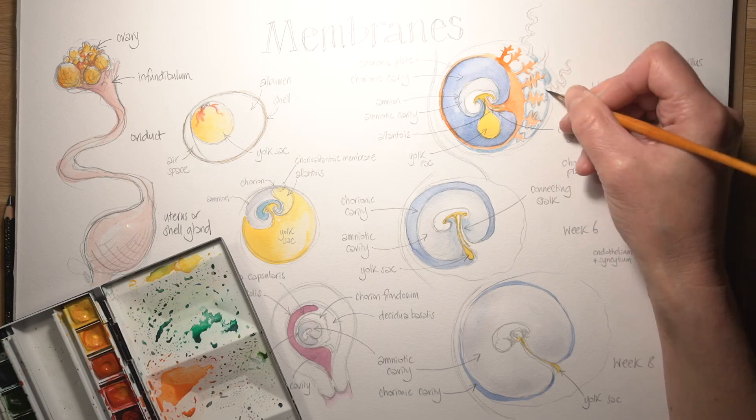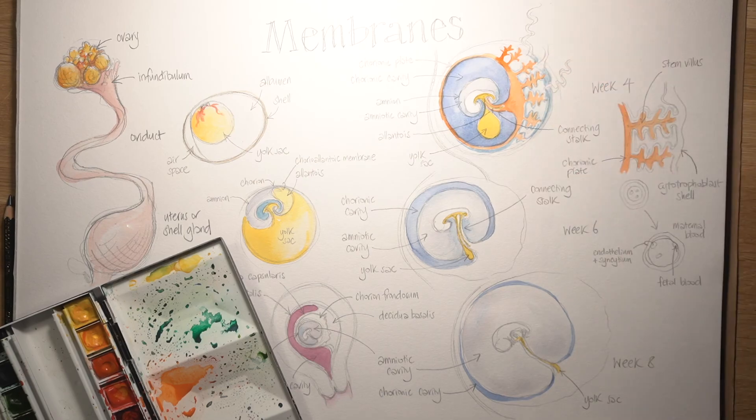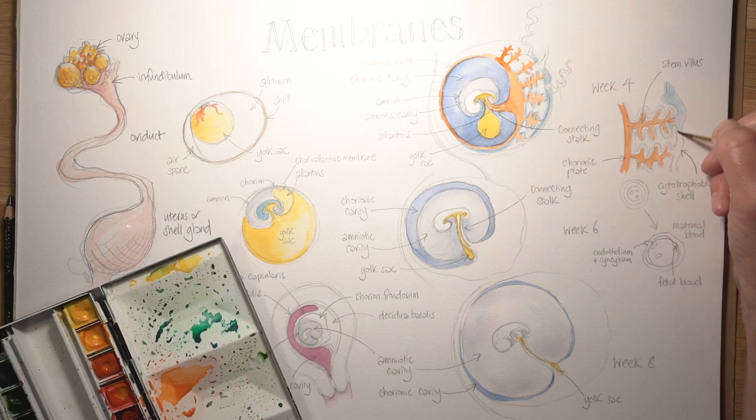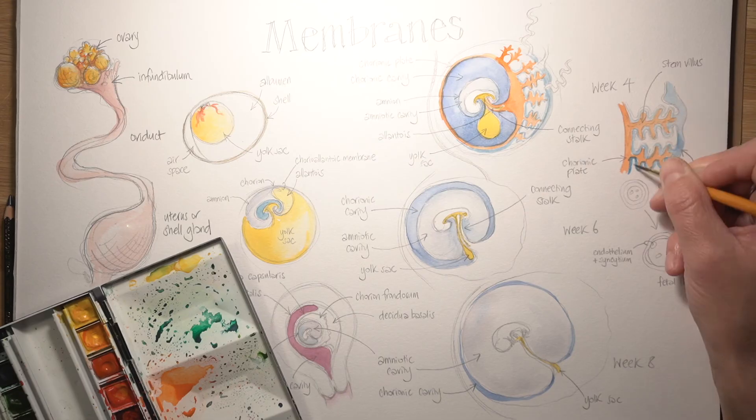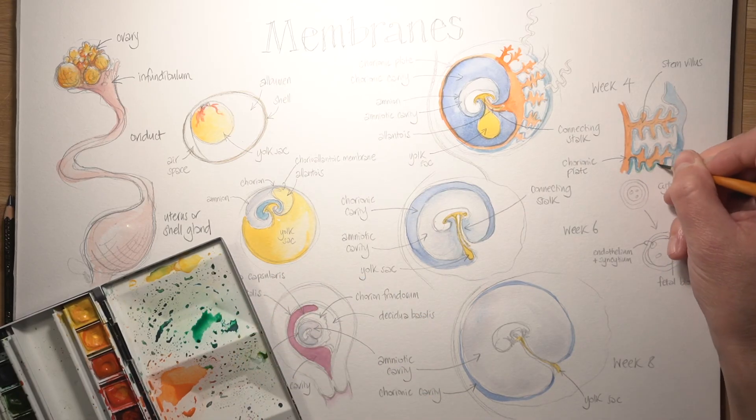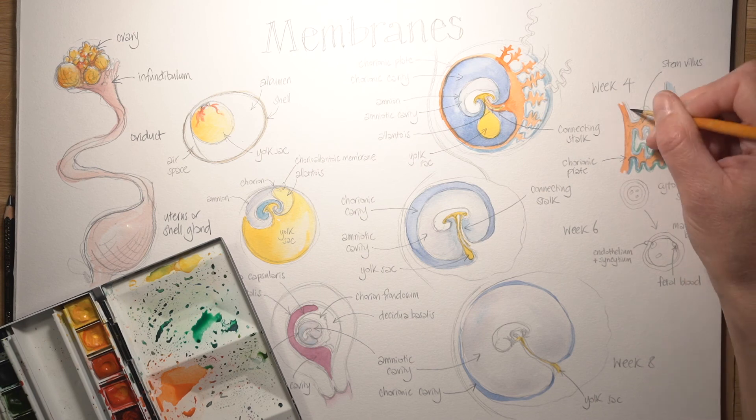I'm now using blue to paint in the cytotrophoblast layer, which expands out to form the cytotrophoblast shell, but is also lining those villi, which are projecting out from the chorionic plate. And then finally, the syncytiotrophoblast, that syncytial layer of cells, which is lining the outside of the villi.